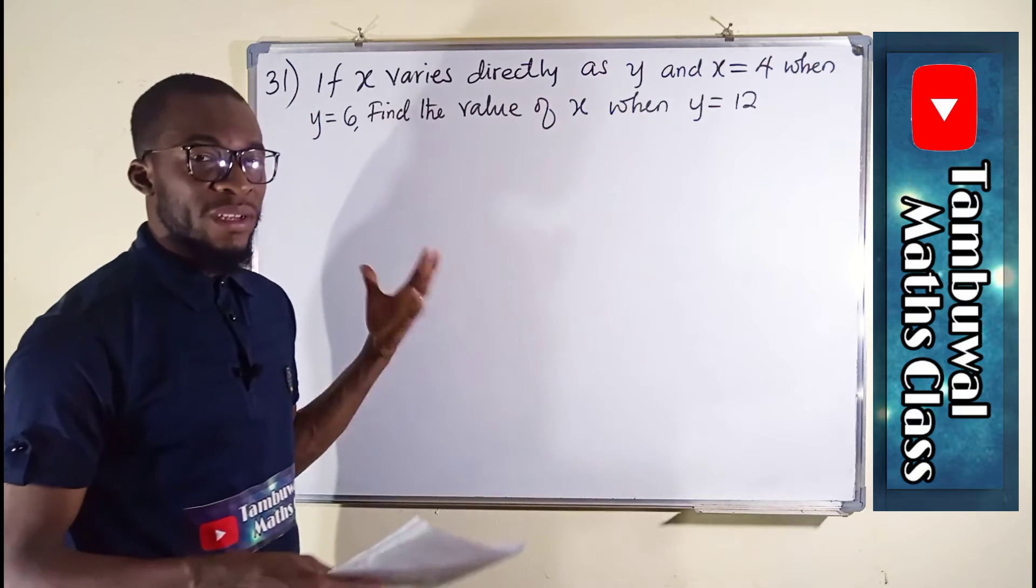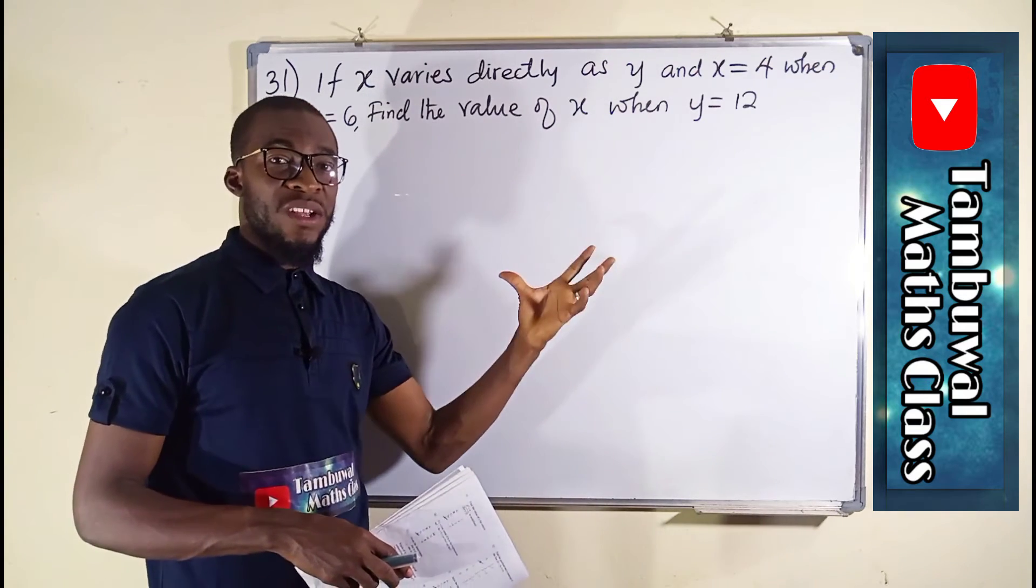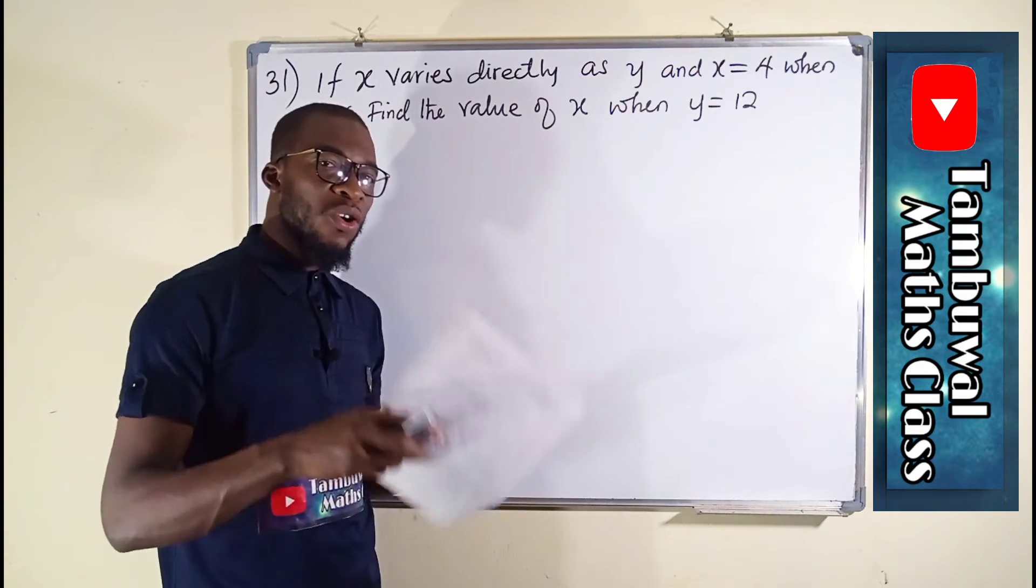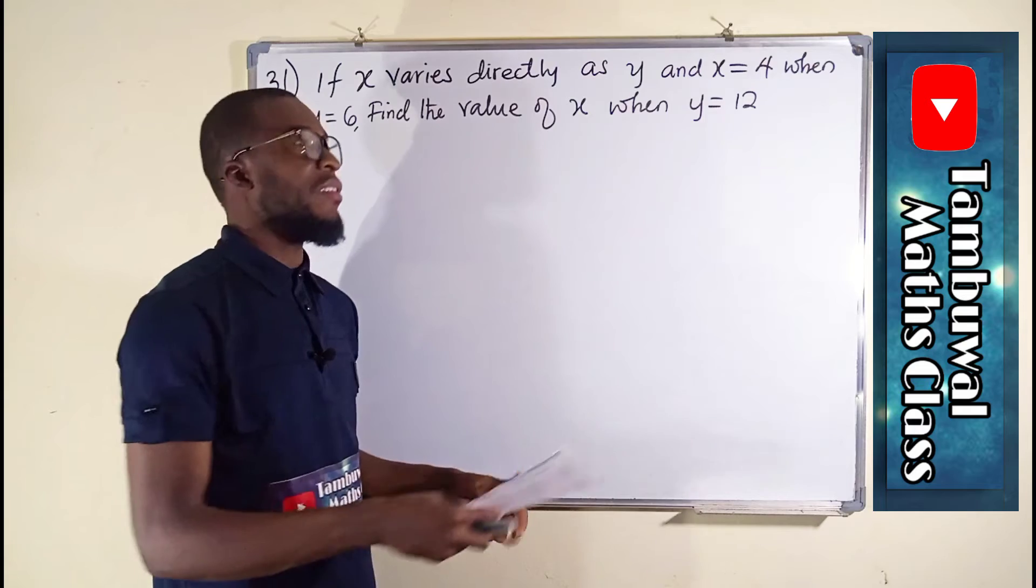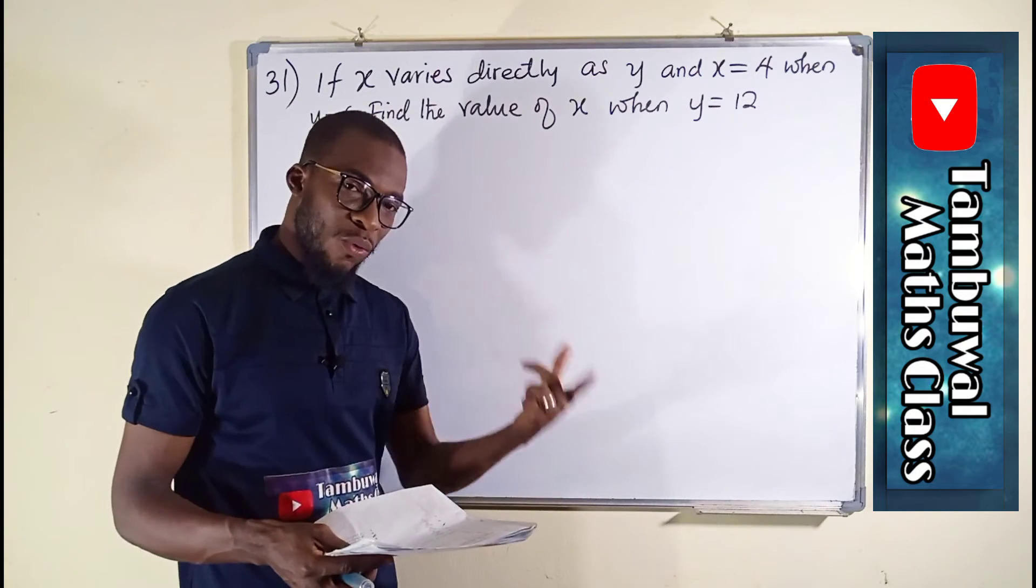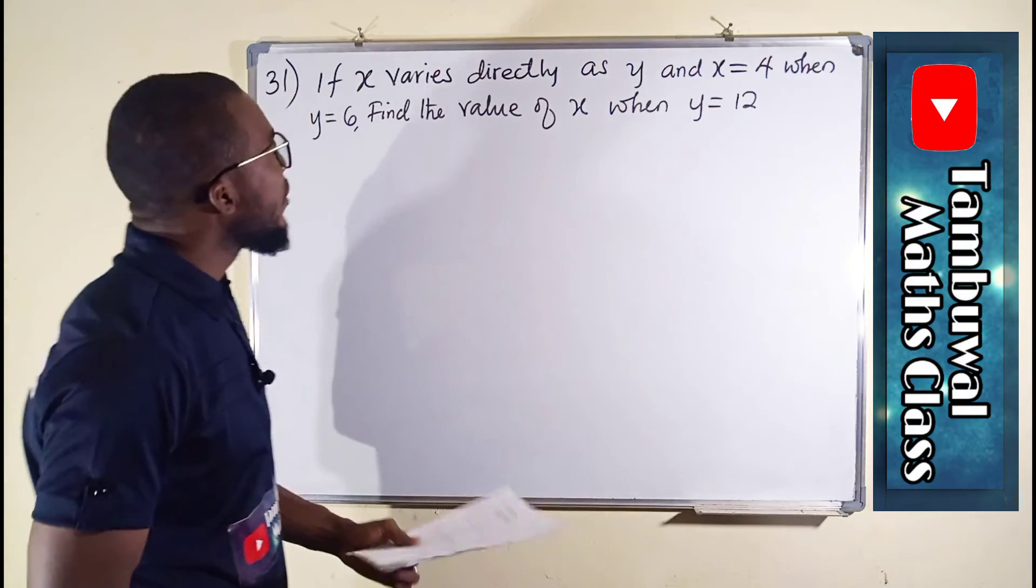We have different types of variation. This is direct variation. In direct variation, the increase in one quantity will cause the increase in the other quantity, unlike inverse variation where an increase in one quantity causes a decrease in the other.